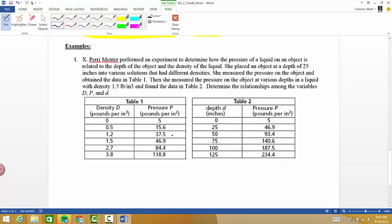So what I want to do is run through this example which will kind of illustrate what we want to get at with this modeling of data. We have this experimenter performed an experiment to determine how the pressure of a liquid on an object is related to the depth of the object and the density of the liquid. So we've got depth of the object and density of the liquid there. She placed an object at a depth of 25 inches into various solutions that had different densities. She measured the pressure of the object and obtained the data in table one.